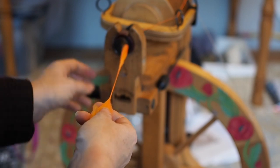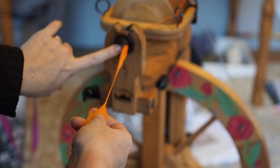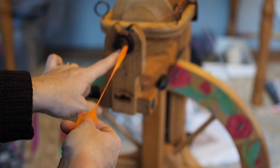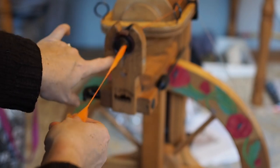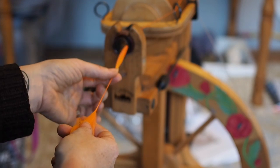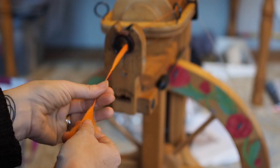I am spinning on a Schacht Matchless with a jumbo flyer. So it has a large orifice here so that when these coils are coiled up and a little fatter, they can fit through without a problem. If you have a spinning wheel that has a much smaller orifice, then you'll need to make smaller coils or get a jumbo flyer.